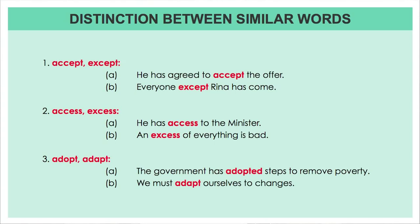Distinction Between Similar Words. Let us look at the words 'Accept' and 'Except.' To spell it out: A-C-C-E-P-T, 'accept,' and the other one, E-X-C-E-P-T, 'except.' Now let us look at the sentences: 'He has agreed to accept the offer.' The other would be, 'Everyone except Rina has come.' So, you see the difference between these similar sounding words?